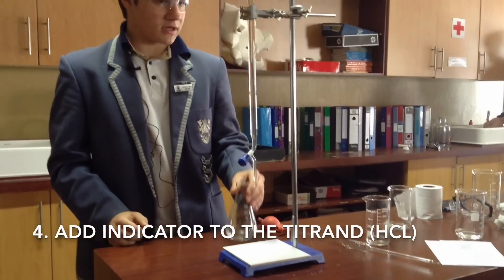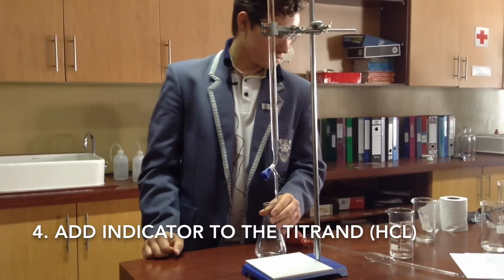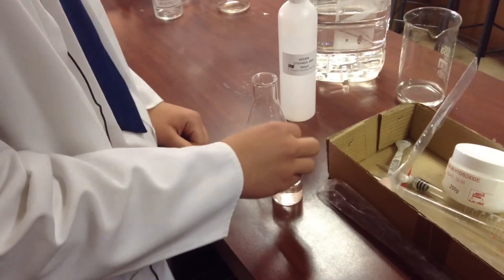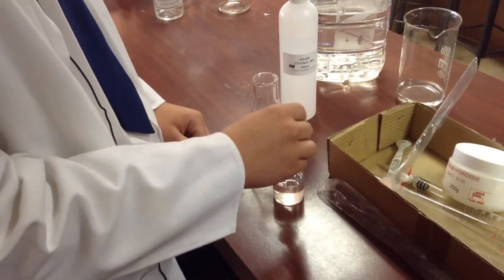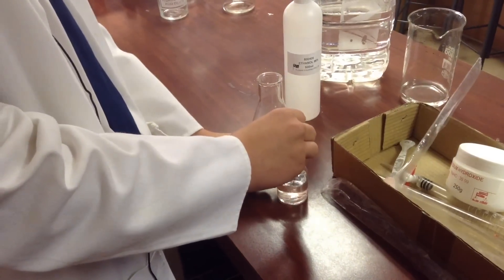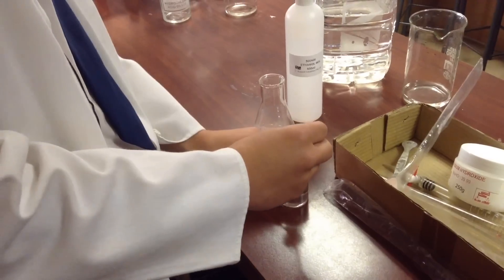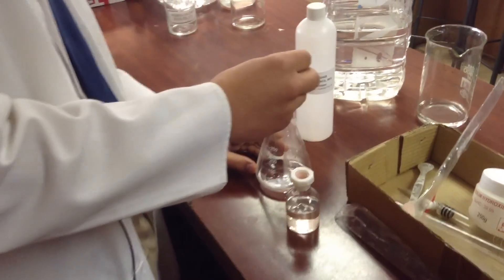Okay, now we're going to need some indicator. For our indicator we're using phenolphthalein, so we're going to use the dropper and we're going to put in three drops of our indicator into our HCl.